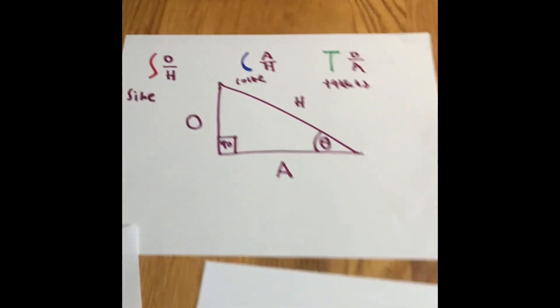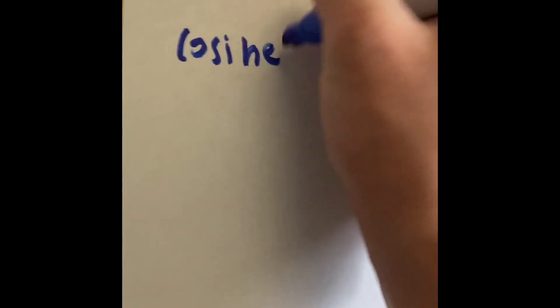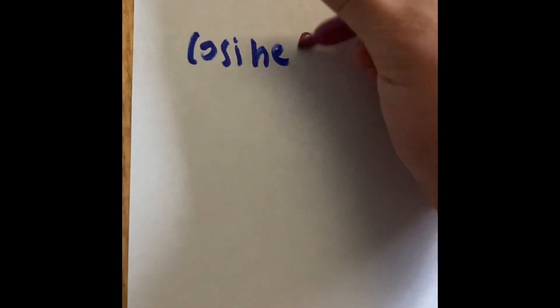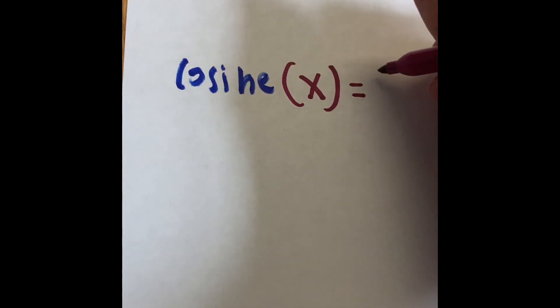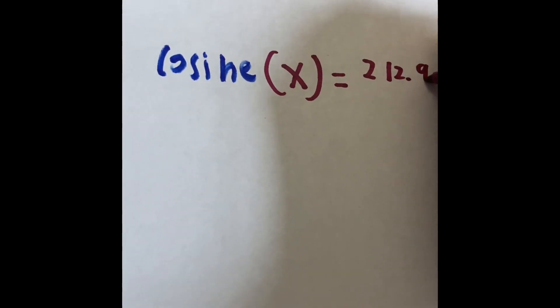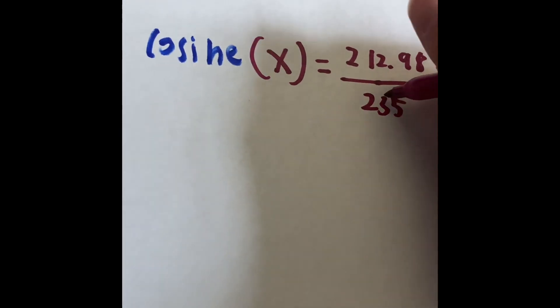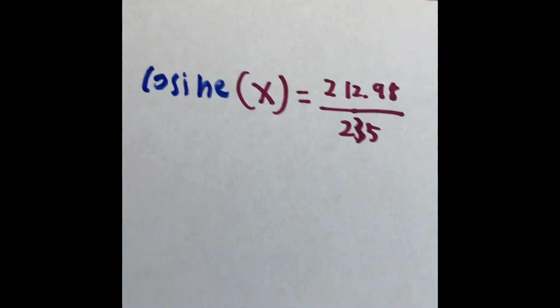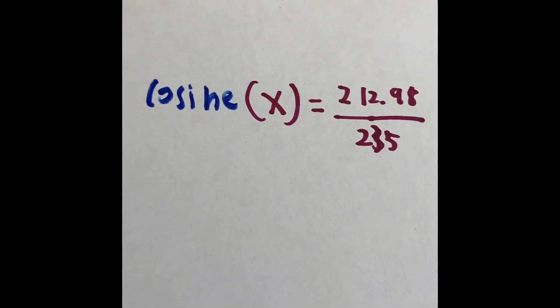So what we're going to do is write over here. So the cosine of x, the cosine of x is going to equal 212.98 divided by 235. Huh? This makes no sense! How can we solve it if we don't know what x is?